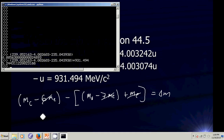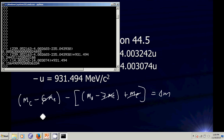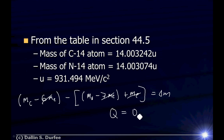So if I take the mass of a carbon-14 atom, which is 14.003242 atomic mass units, and subtract the mass of a nitrogen-14 atom, which is 14.003074 atomic mass units, then convert to MeV by multiplying by 931.494, the energy released is 0.156 MeV. That's how much energy is released when carbon-14 undergoes beta minus decay.